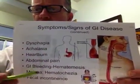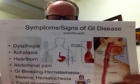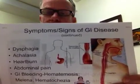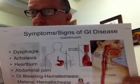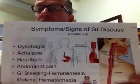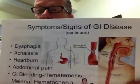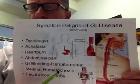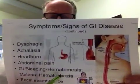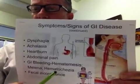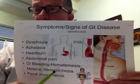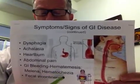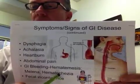Gastrointestinal bleeds can lead to hematemesis — emesis means throwing up; if there's blood in it, it's called hematemesis. Hematemesis is going to be bright red. Hematochesia refers to defecating and having blood in the stool. Both hematemesis and hematochesia are bright red.